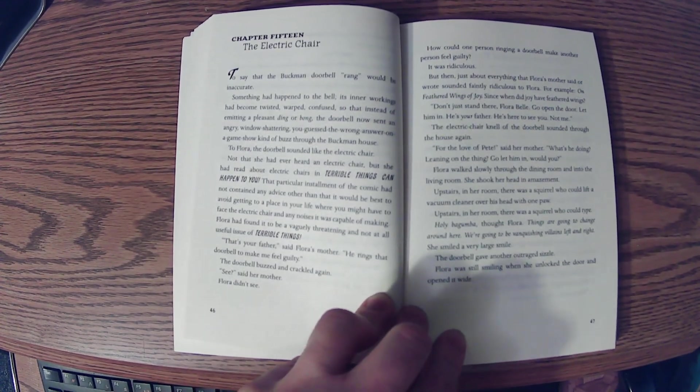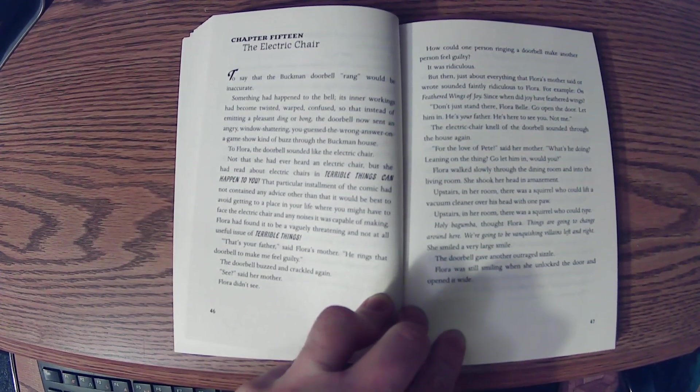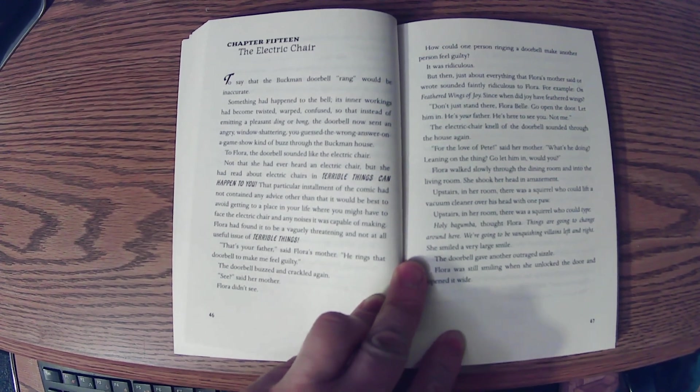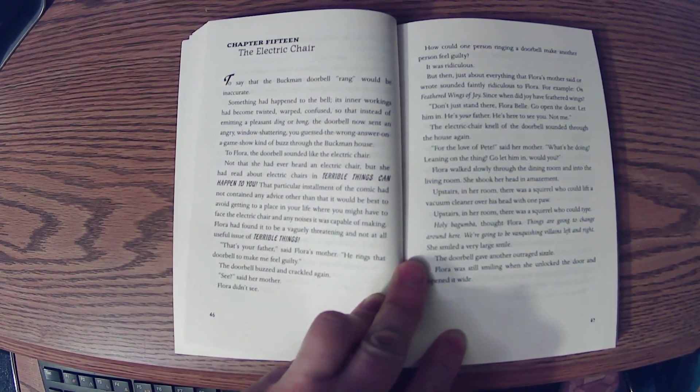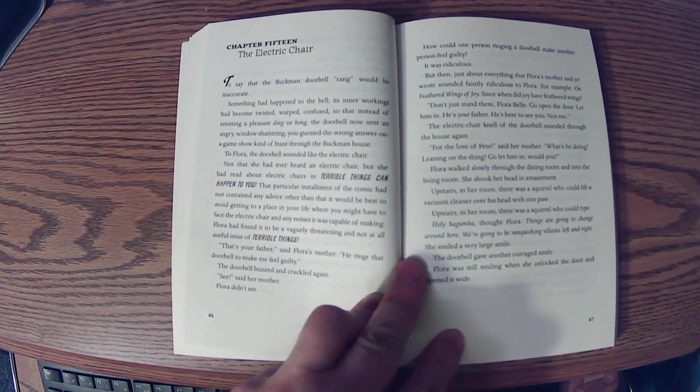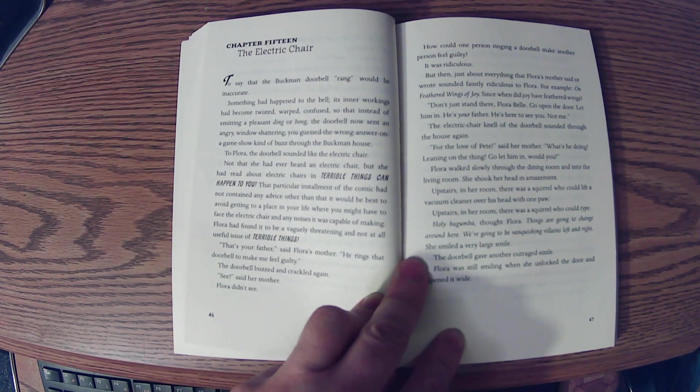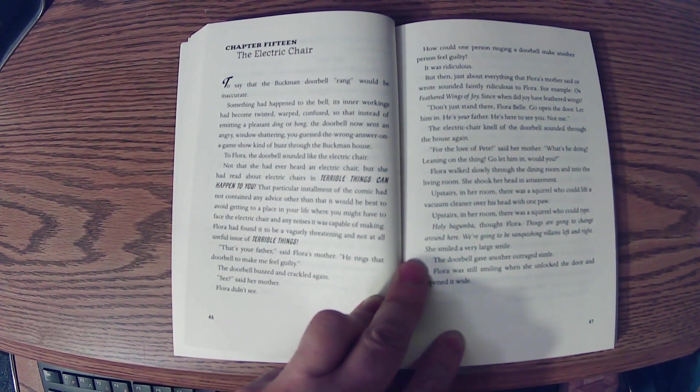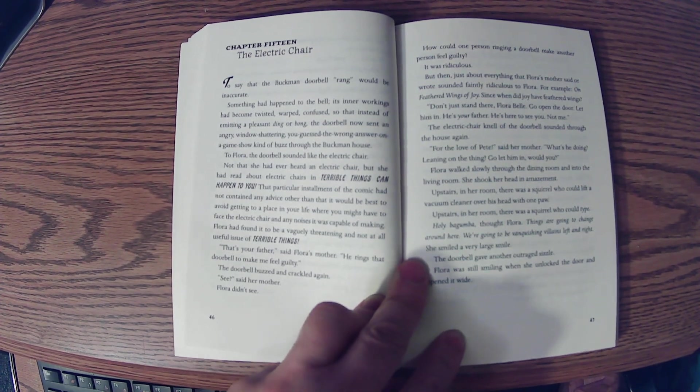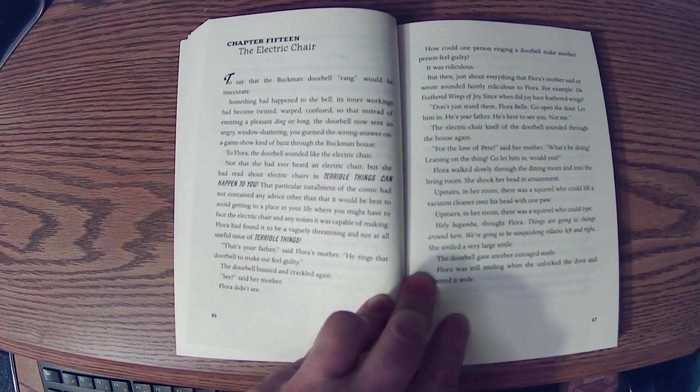Chapter 15, The Electric Chair. To say that the Buckman doorbell rang would be inaccurate. Something had happened to the bell. Its inner workings had become twisted, warped, confused, so that instead of emitting a pleasant ding or bong, the doorbell now sent an angry, window-shattering, you-guessed-the-wrong-answer-on-a-game-show kind of buzz through the Buckman house. To Flora, the doorbell sounded like the electric chair.